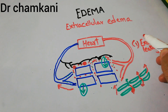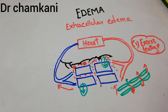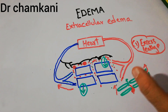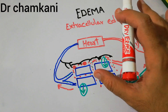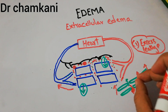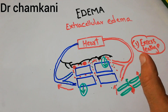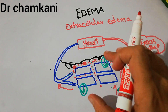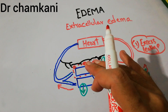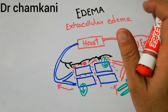What causes this excessive leakage from the capillaries? There are many toxins, diseases, and pathologies which can cause excessive leakage — we will discuss them one by one in later lectures. In general, any factor leading to excessive leakage of plasma from the capillaries will cause excess fluid accumulation outside the cells in the interstitium, leading to extracellular edema.